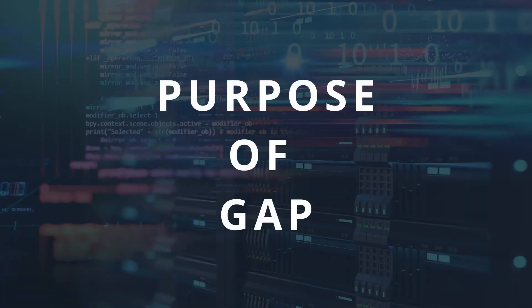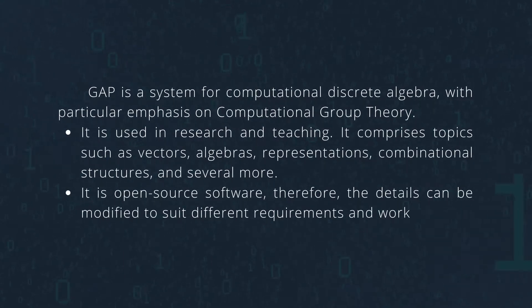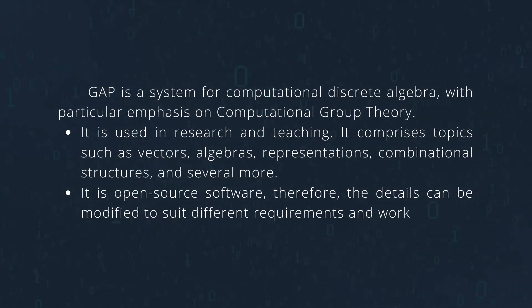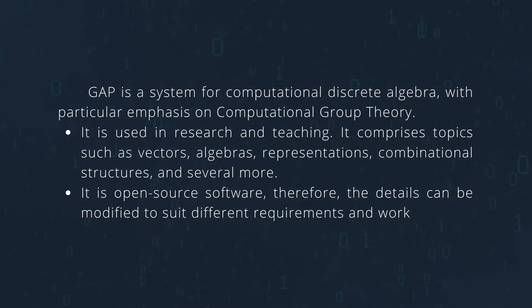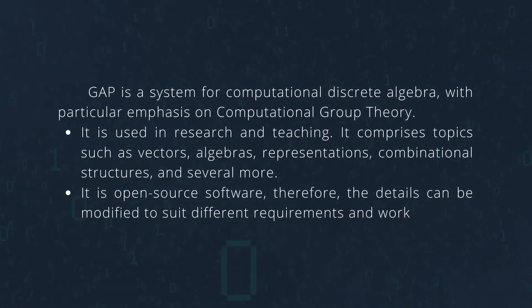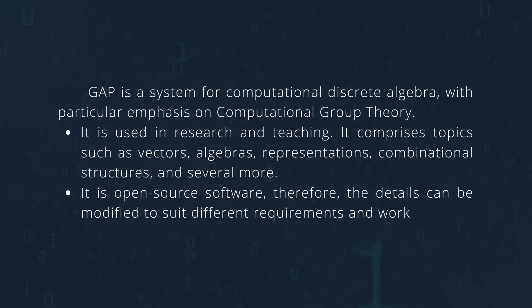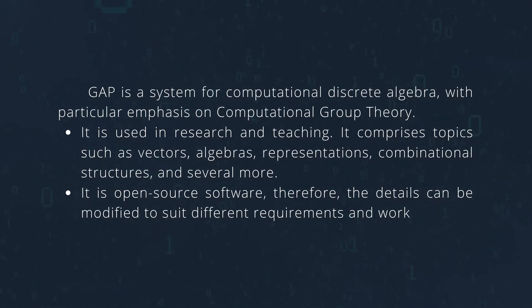Purpose of Groups, Algorithm, and Programming: GAP is a system for Computational Discrete Algebra with particular emphasis on Computational Group Theory, which in mathematics is the study of groups by means of computers. It is concerned with designing and analyzing algorithms and data structures to compute information about groups. GAP is used in research and teaching and has many applications whether you are a professor, a researcher, or even a student. GAP can be utilized since it covers capabilities such as vectors, algebras, representation, combinational structures, and several more.